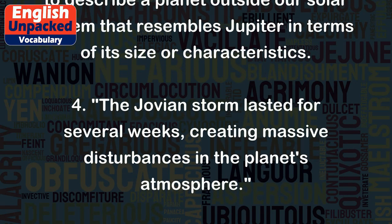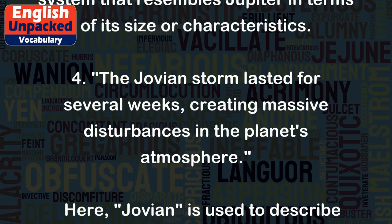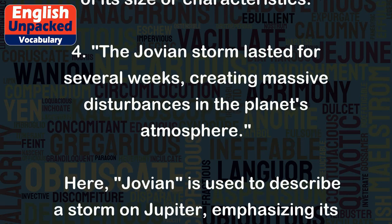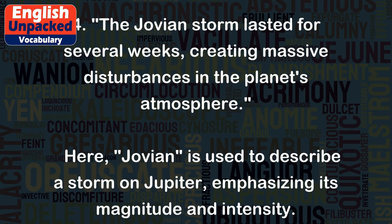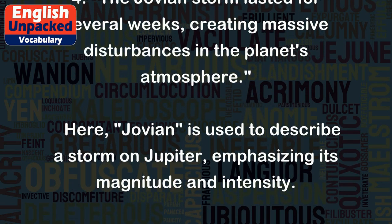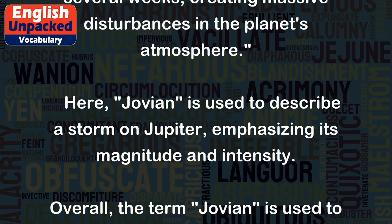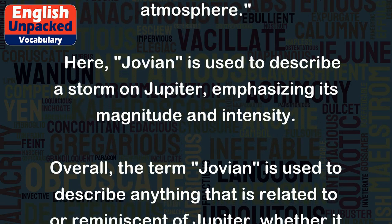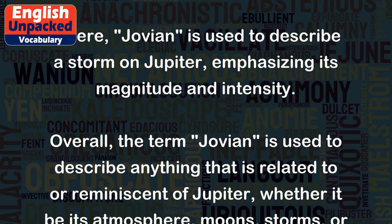4. The Jovian storm lasted for several weeks, creating massive disturbances in the planet's atmosphere. Here, Jovian is used to describe a storm on Jupiter, emphasizing its magnitude and intensity.